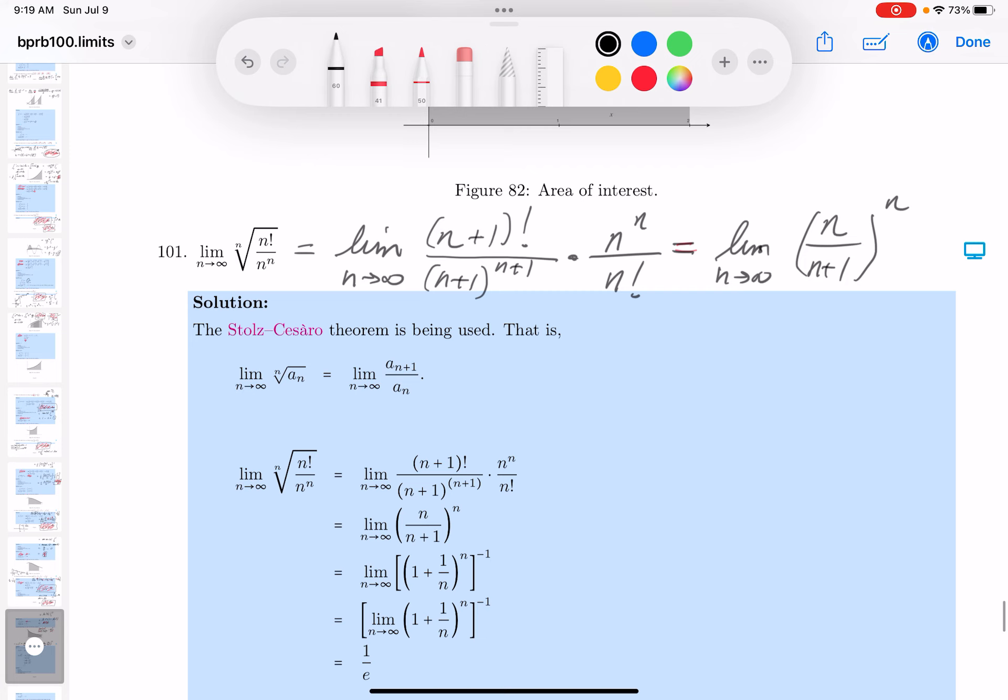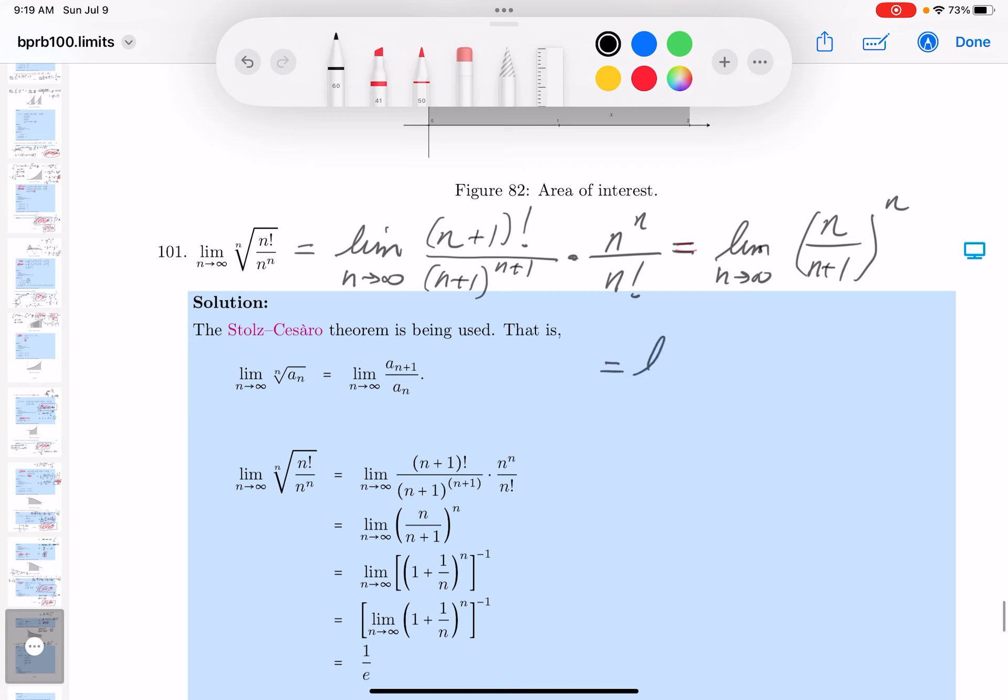Limit as N goes to infinity. And we're left off with N over N plus 1 to the N. All right. Now, I'm going to write that a little bit differently. Limit. This pertains to the problem set we've been dealing with. I'm going to write it as N plus 1 over N to the minus N.